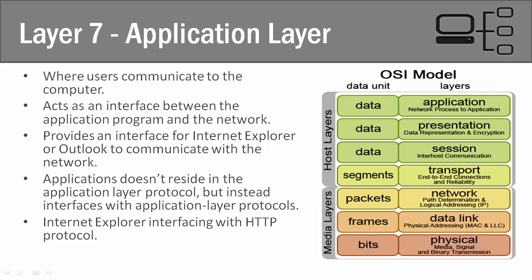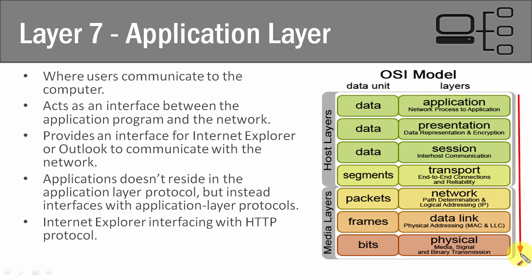We're going to start our discussion talking about the OSI model, starting with layer 7, which is the application layer. We're starting at the very top layer at the host layers and we're going to work our way down all the way to the physical layer, which is the very bottom layer where the data is going to be moving across the network.